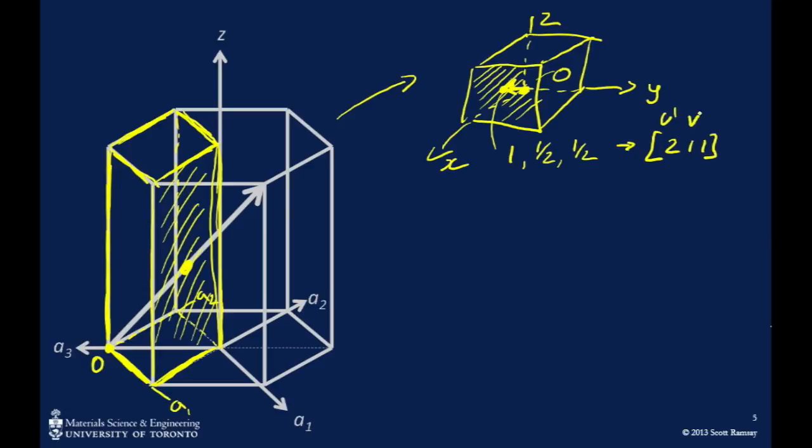So if this was our origin, where it originated, that means the head of the vector has point coordinates of 1 in the x, 1 half in the y, and 1 half in the z, which means that our temporary three-axis notation is going to be 2, 1, 1. So that's u prime, v prime, w prime.